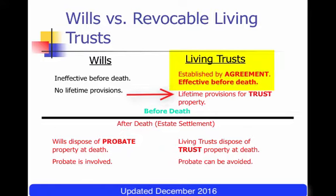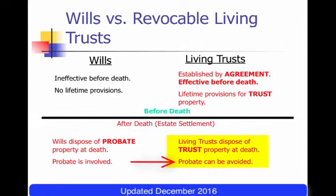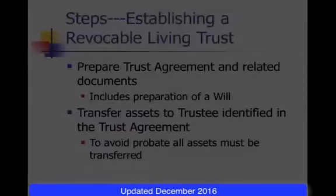After you pass away, the assets in the trust are disposed of by the terms of the trust. If the trust owned everything you had, there wouldn't even be a need to go to the probate court to have the will probated — probate could be avoided. That's why it's thought of as a probate avoidance technique.